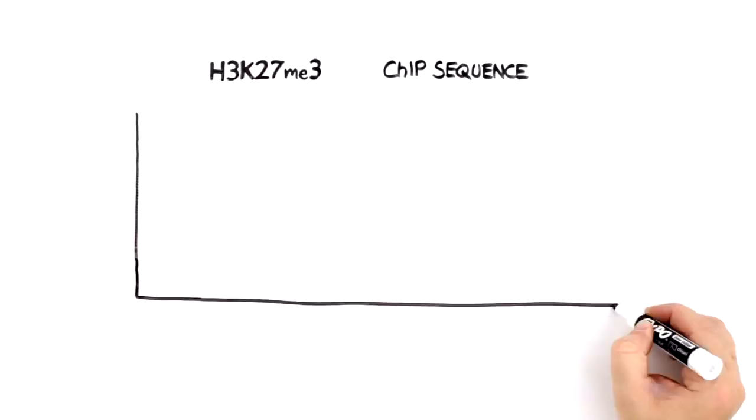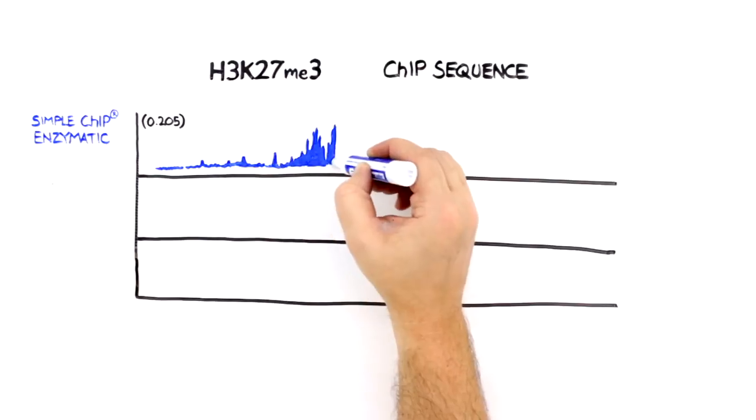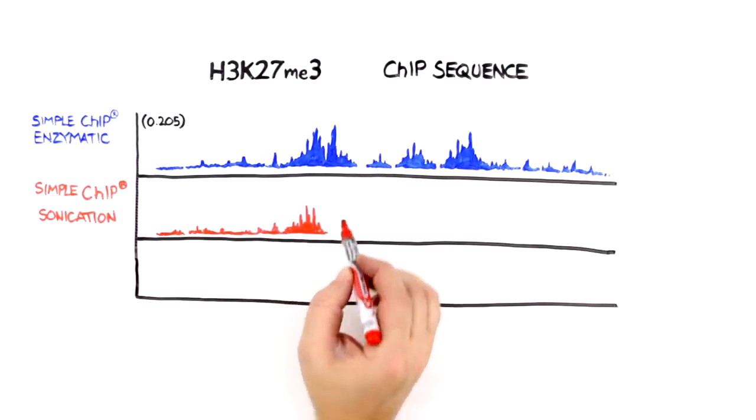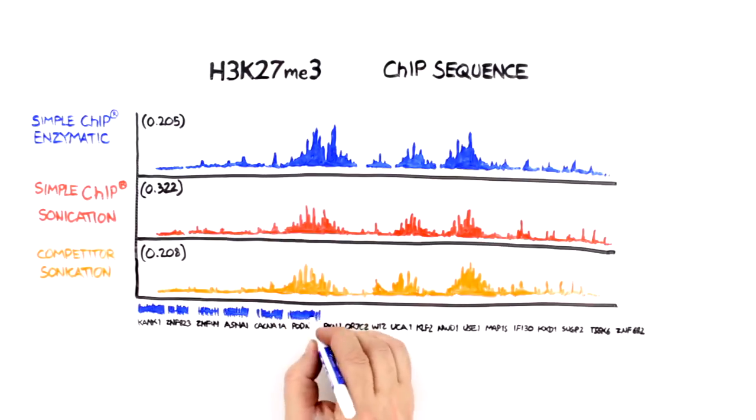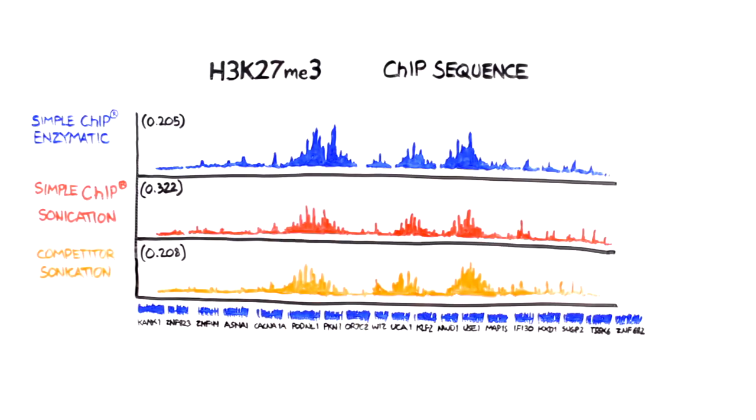Since histones are resistant to harsh fragmentation conditions, both enzymatic digestion and traditional sonication can easily be used to generate a successful ChIP experiment, as shown here for trimethyl histone H3-lysine 27.